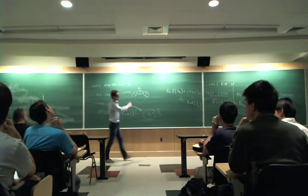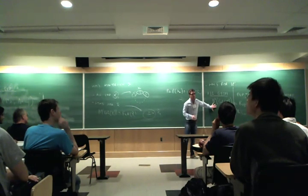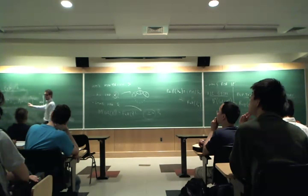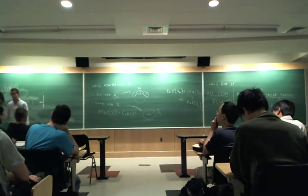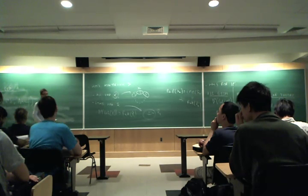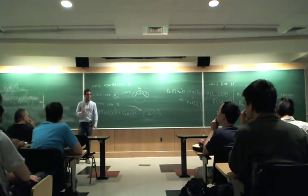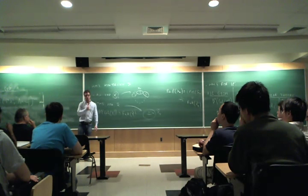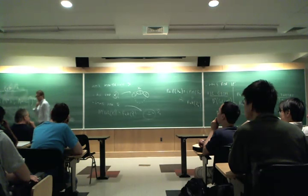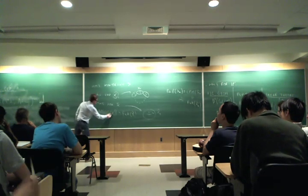So now, if we read this chain of equivalences, starting from here and ending there, we start from the derived category of P^1, and we land with the Fukaya category of T star S^1, and so we obtain a homological mirror symmetry kind of statement. Let me convince you that this chain of equivalences doesn't realize any random equivalence. Actually, it fits very well with our intuition of how mirror symmetry should work, in particular in the SYZ picture.